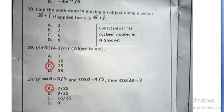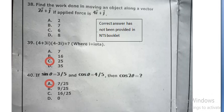If sine theta is equal to 3 by 5 and cosine theta 4 by 5, then cosine 2 theta equals 7 by 25, option A.